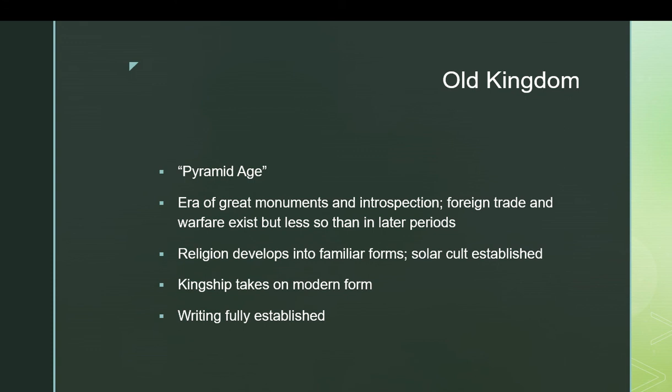Religion seems to have developed into the form we know it as during this period. The association of Horus with the king took place very early on in Egyptian history. This is the period when he was also associated with the sun god, the other main royal association. Kingship takes on its modern form — the royal name becomes standardized. The Egyptian bureaucracy forms, which is a very important part of understanding how ancient Egypt functioned. This is when Egypt becomes what we know it as, and all the basic tropes of Egyptian society come into being.